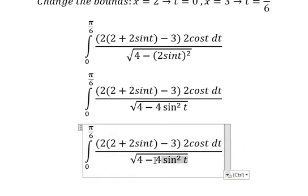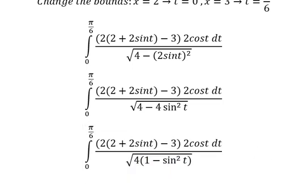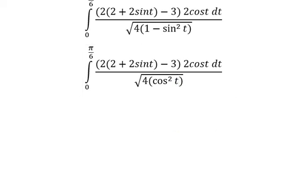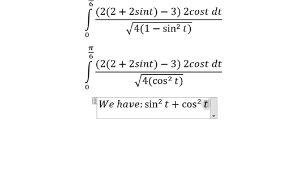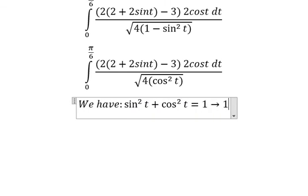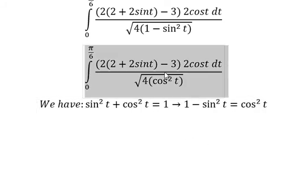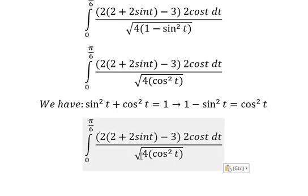Number 4, we can do factorization: 1 minus sine t squared we change for cosine t squared, because we have the formula sine squared t plus cosine squared t equals 1. So we put sine t squared to the right, we have 1 minus sine t squared equals cosine t squared. This one, the square root of number 4 cosine t squared, we have 2 cosine t.